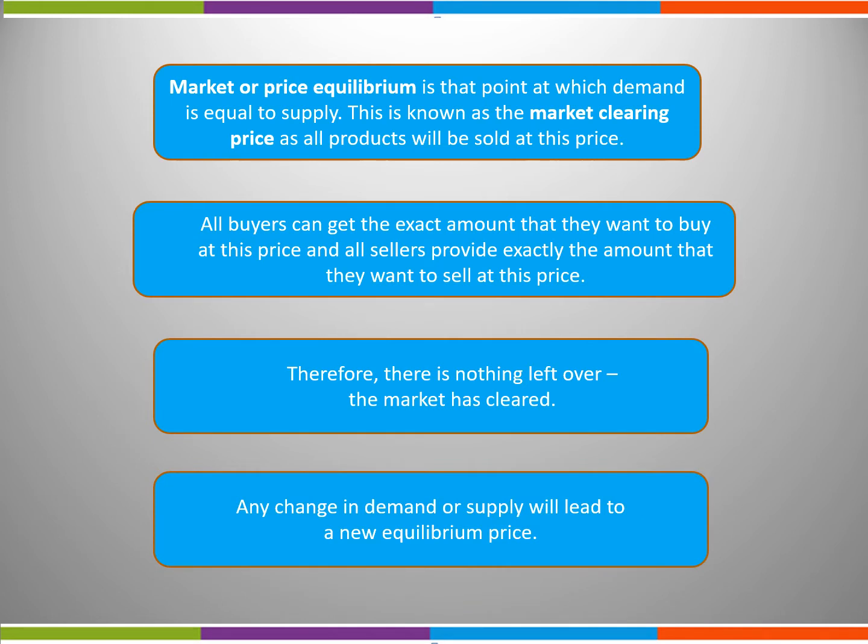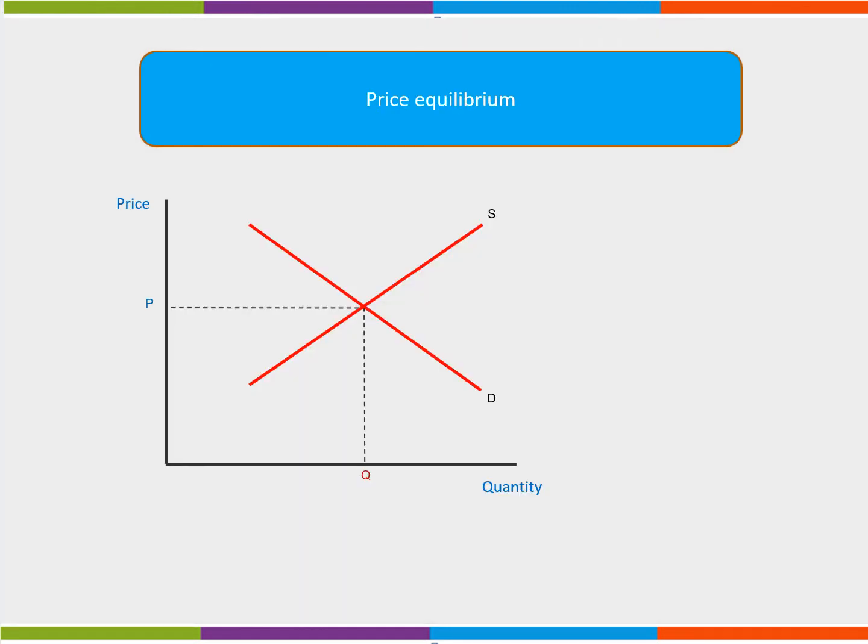Any change in demand or supply will lead to a new equilibrium price. We can illustrate this diagrammatically. At the price of P, quantity demanded is equal to quantity supplied. All products are sold and no products are left over. The market has cleared.